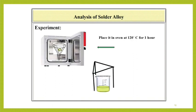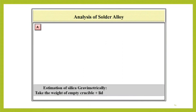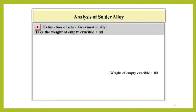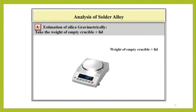Now, dry the residue of SnO2 in an oven at 120 degree centigrade or on a metallic cone on a low flame. Then, take the weight of empty crucible plus lid and record this reading as W1 gram.